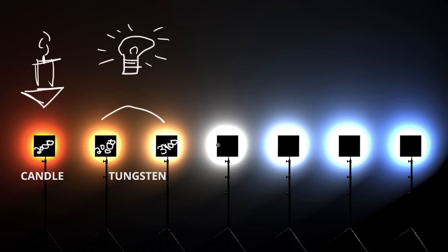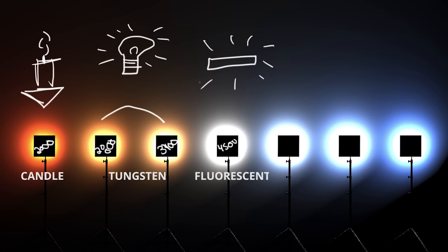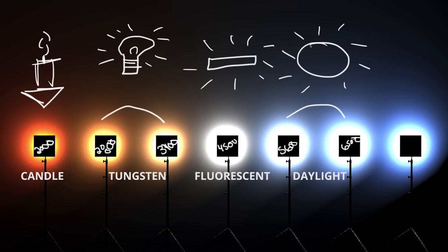Next we have the 4500 degree range, and this is going to be your fluorescent lights. If you're in an office space or a hospital, these are the lights that also tend to have a bad color cast, which is where you'll need color correction from your white balance. Then we have 5600 and 6500 degrees Kelvin — these two are your sun or daylight. It can range a little lower or higher depending on the weather; if it's overcast it'll be higher, and with a bright blue sky it might be a bit lower.